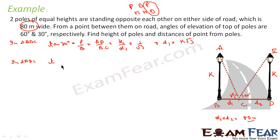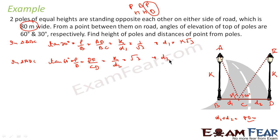Similarly, in triangle ADC, using tan 60° = P/B, where P = DE and B = CD, we get tan 60° = k/d2, which equals √3. So d2 = k/√3. Now using d1 + d2 = 80, we write k√3 + k/√3 = 80.